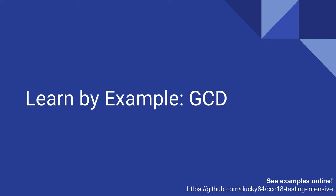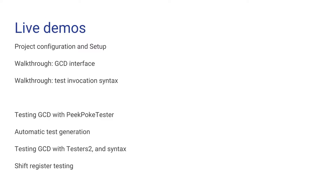Learn by example: GCD. This is now online on GitHub — chisel-ccc18-testing-intensive. The examples are online. What I'm going to go over is: project configuration setup, walkthrough of the GCD module, test invocation syntax, GCD with PeekPoke tester, a bit about test automation, a little about property verification with ScalaCheck, and then the Testers 2 syntax and proposing test abstractions. I also threw in a shift register which shows a good application of fork/join testing.